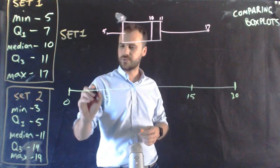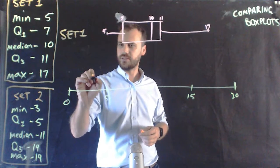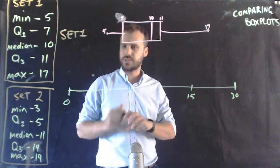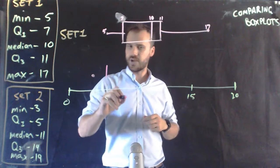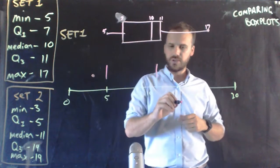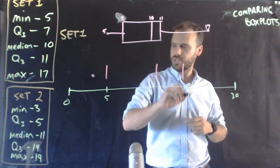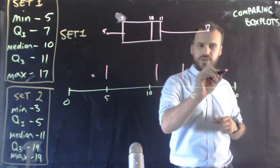Now here's my set two. I had a minimum of three. Excuse the bell. Oops, let's use the same colour here. Minimum of three, Q1 of five, median of 11, Q3 of 14, and a max of 19.